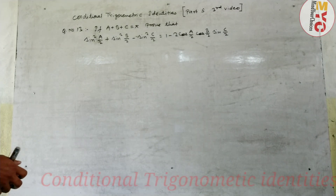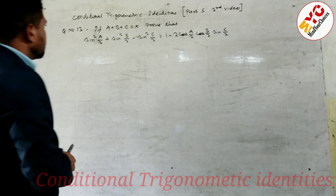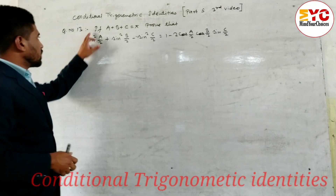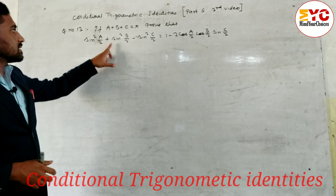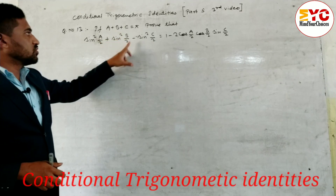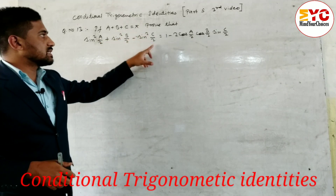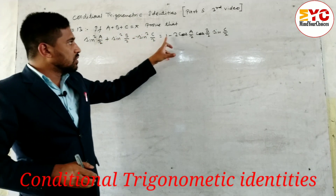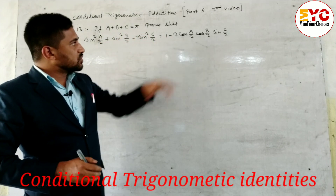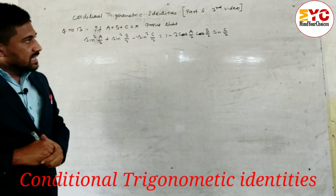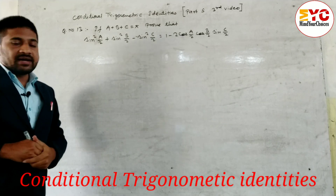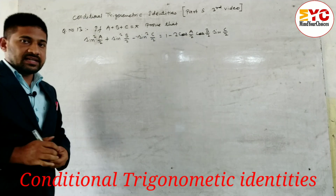If a plus b plus c is equal to pi, prove that sin square a by 2 plus sin square b by 2 minus sin square c by 2 is equal to 1 minus 2 cos a by 2 cos b by 2 sin c by 2.